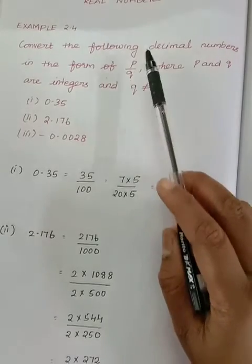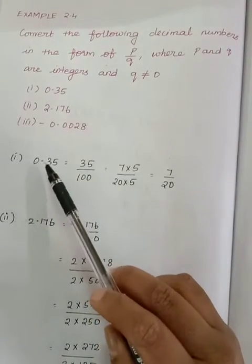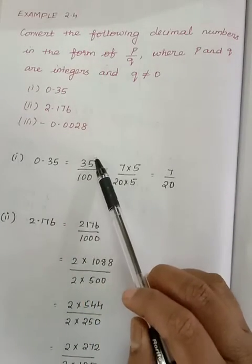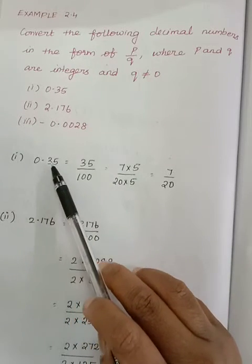Q should be not equal to 0, we should write this in the form P by Q. So 0.35, what is the meaning of 0.35? It means 35 divided by 100. 35 divided by 100 only gives you 0.35.